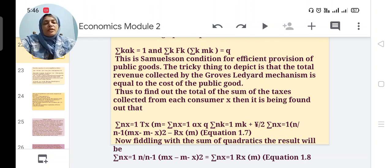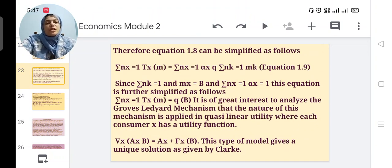Σ(x=1 to n)[n/(n-1) × (mx - m̄(-x))²] = Σ(x=1 to n)r(x)(m), considered as equation 1.8. Therefore equation 1.8 can be simplified as follows: Σ(x=1 to n)tx(m) = Σ(x=1 to n)[αx·q·Σ(k=1 to n)mk], considered as equation 1.9.